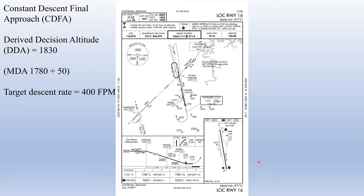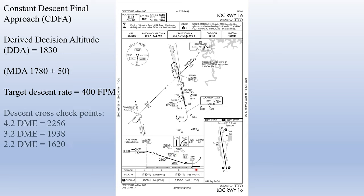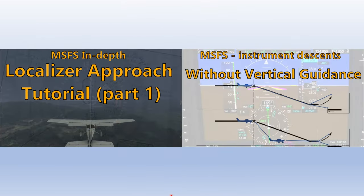The target descent rate to stay on the 3-degree glide path or visual descent angle is approximately 400 feet per minute. Our descent cross-check points will be at 4.2 DME, 3.2 DME, and 2.2 DME — corresponding to 3 miles, 2 miles, and 1 mile from the runway respectively. We should be at specific altitudes at each point to confirm we're on the glide path. If this isn't making sense, go back to the in-depth localizer approach tutorial part one, or the video on instrument descents without vertical guidance — both linked in the description.